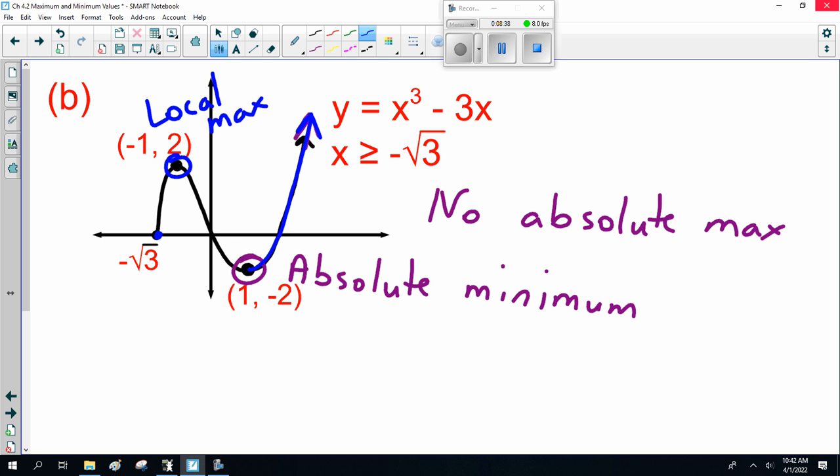And finally, once we have a local maximum, that means we should have a minimum on either side. Well, we've got the absolute minimum here, but on this side we have a local minimum at x = -√3. So we've got a local minimum, we've got a local maximum, we have an absolute minimum, but no absolute maximum because it keeps on going.